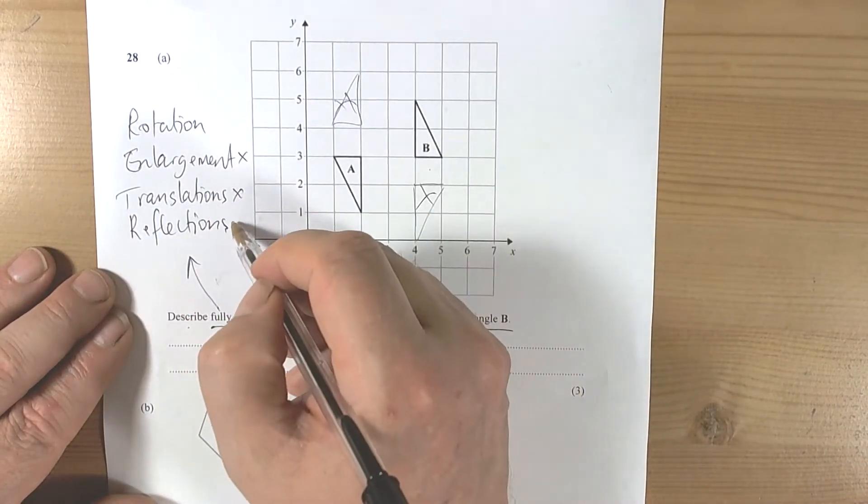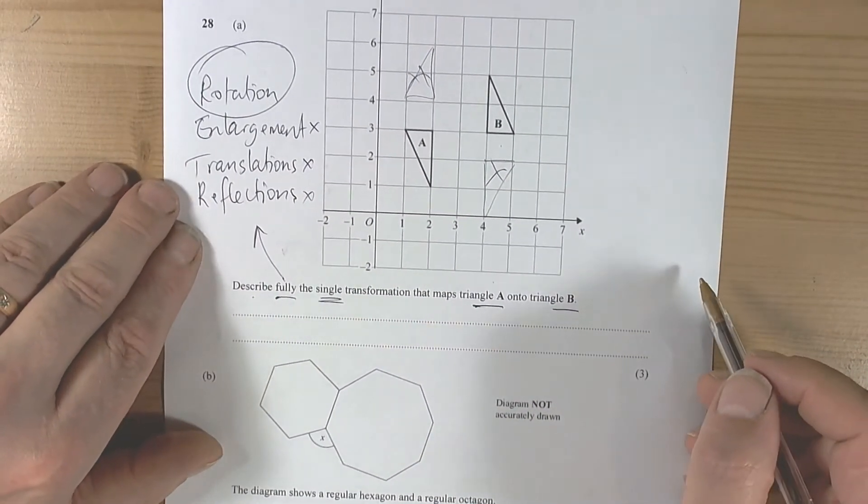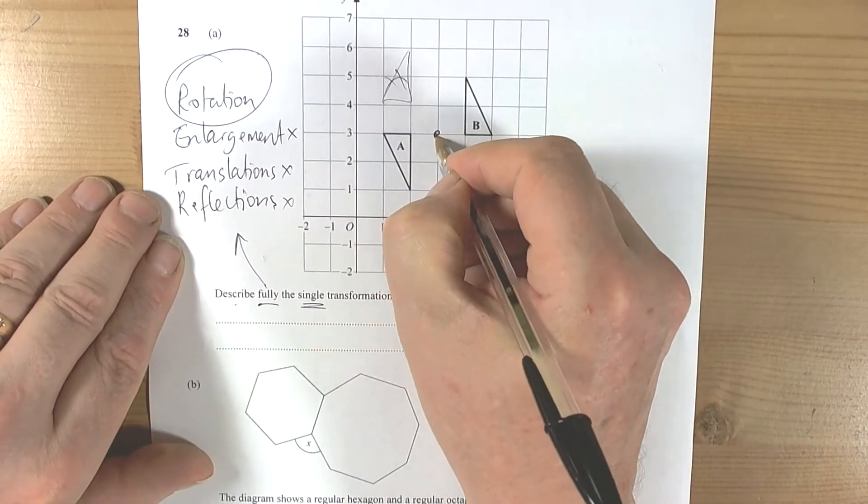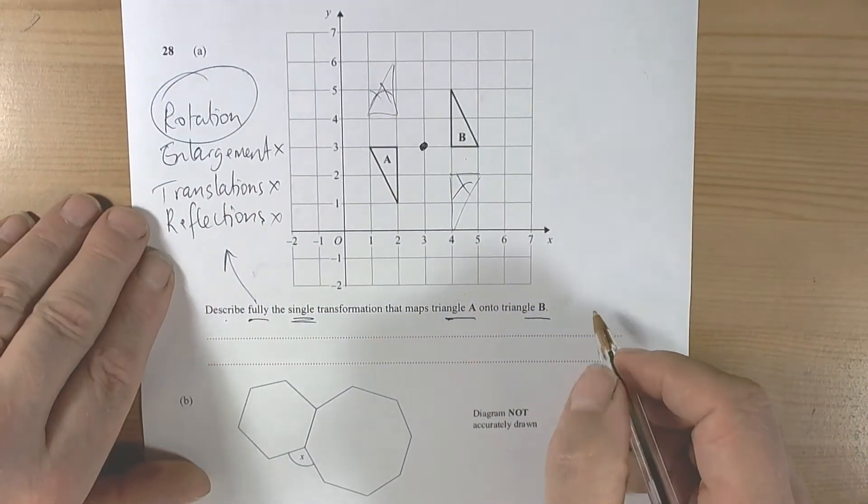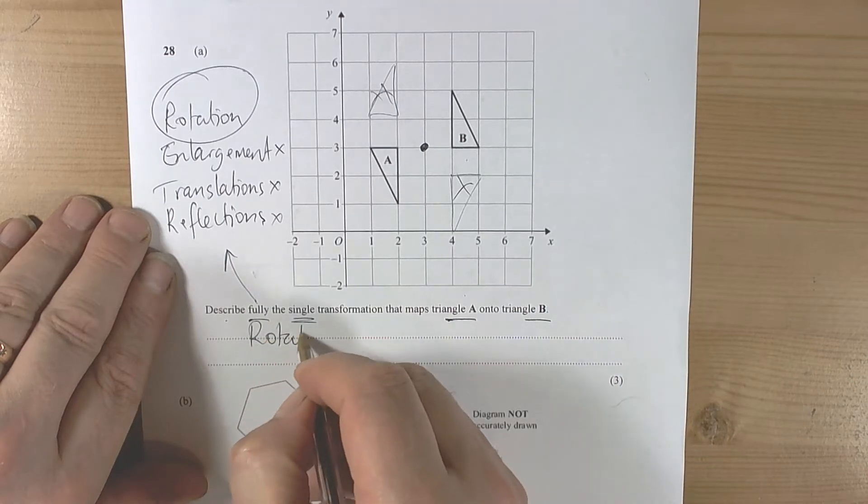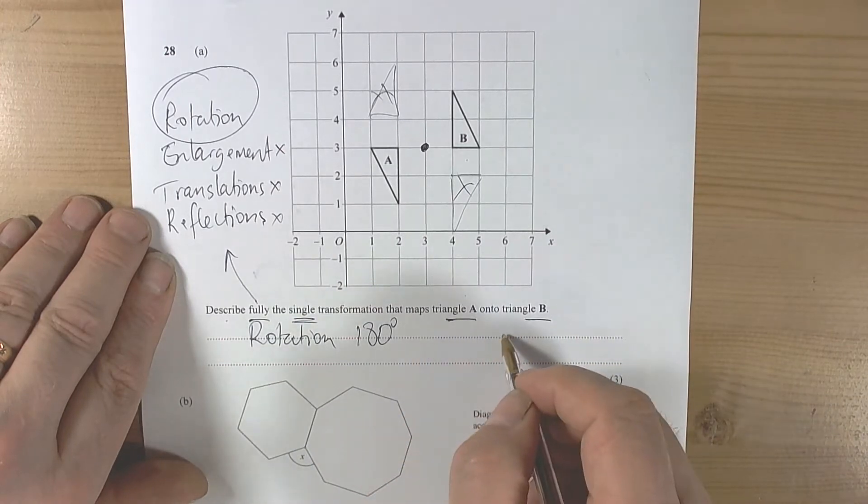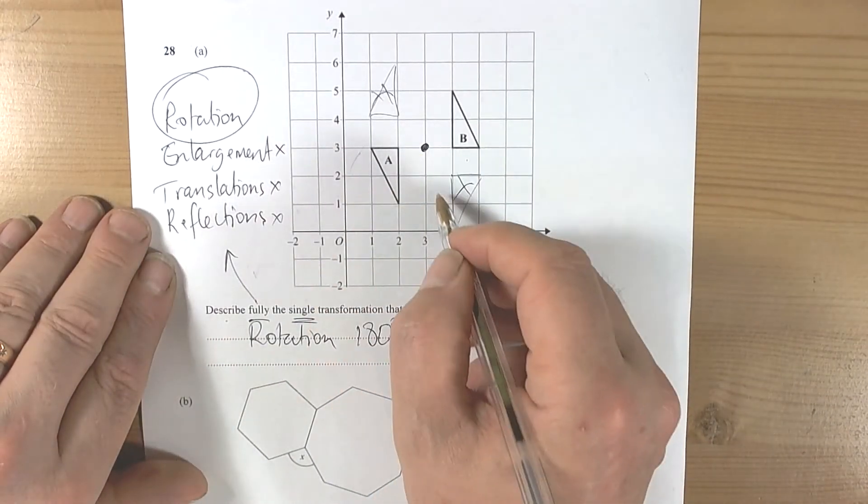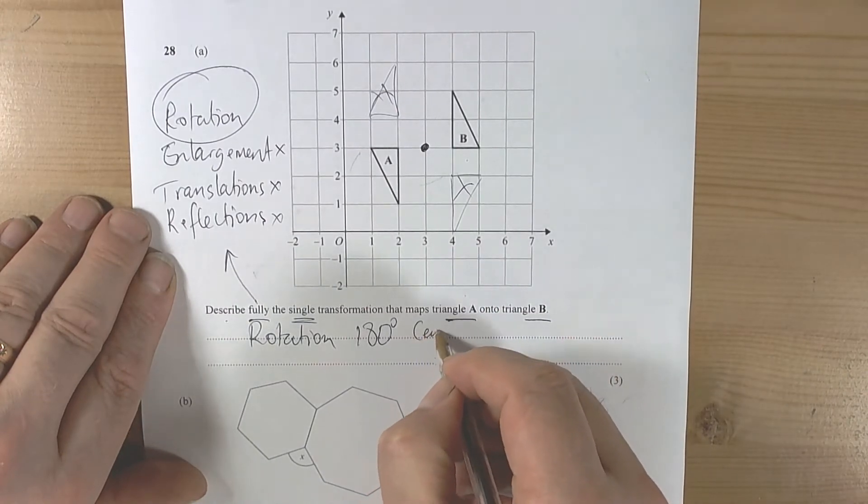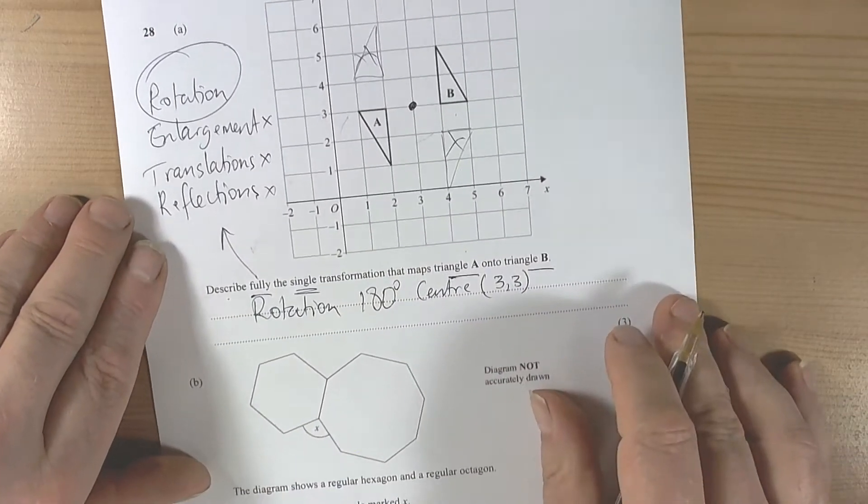So it has to be a rotation. We'd get some tracing paper normally and use it to decide where the center of rotation is. We can see quite quickly the center of rotation must be there and it's rotated 180 degrees. You'd normally say anti-clockwise or clockwise, but in this case at 180 degrees it doesn't matter which direction you go, and it's got a center of rotation at the coordinate (3,3).